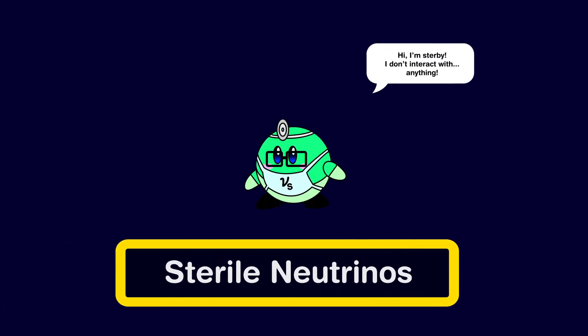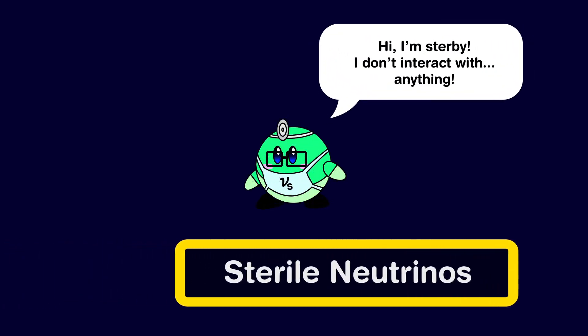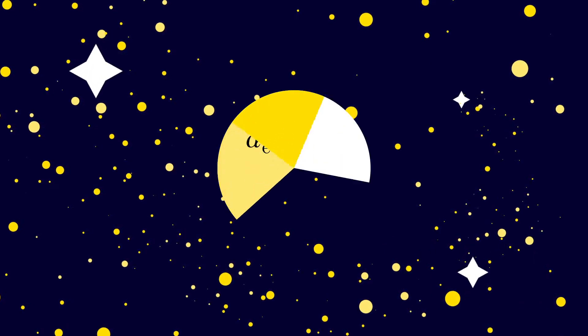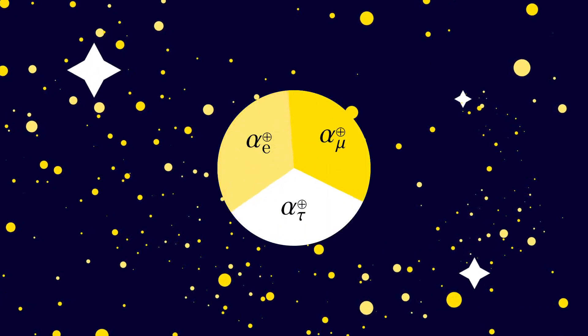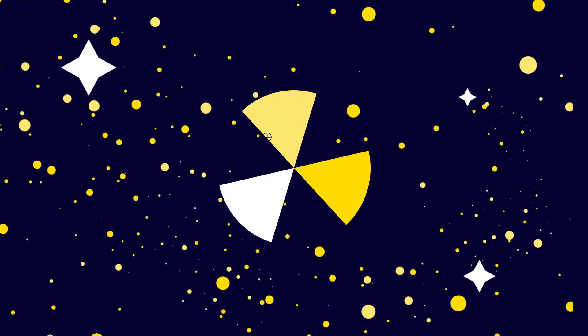Sterile neutrinos could be the solution to several neutrino anomalies that exist in Earth-based experiments. Through astrophysical neutrino flavour, we can explore the effects of sterile neutrinos by looking at the imprint their mixing would leave on the active neutrinos. So what are their effects, and can we use astrophysical neutrino flavour today to actually search for sterile neutrinos?